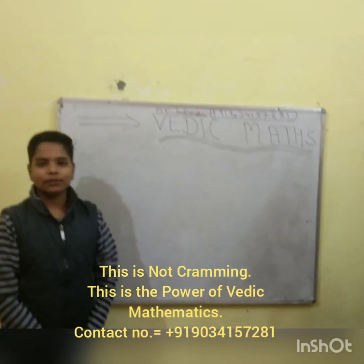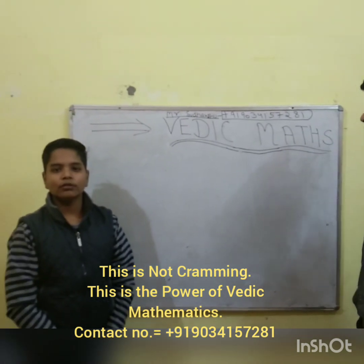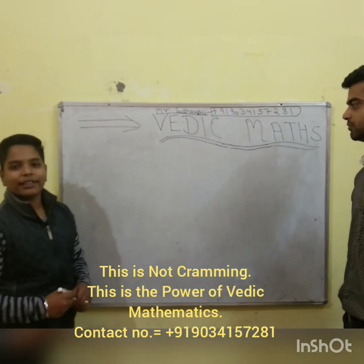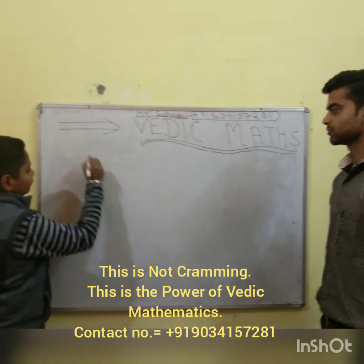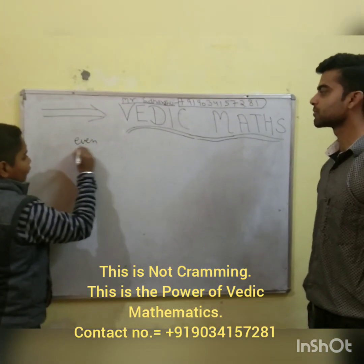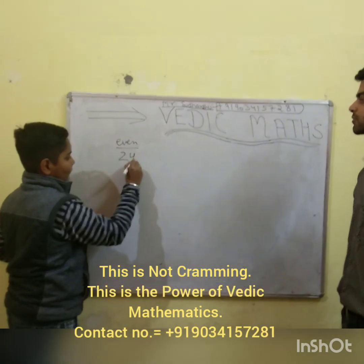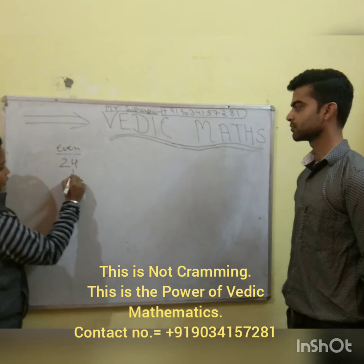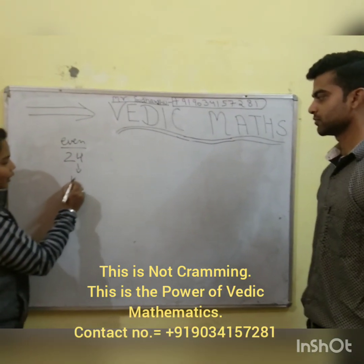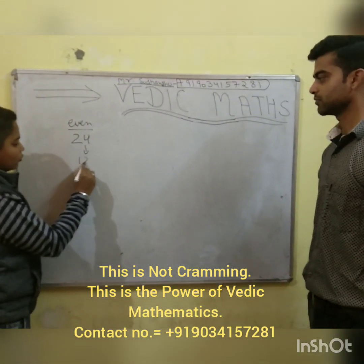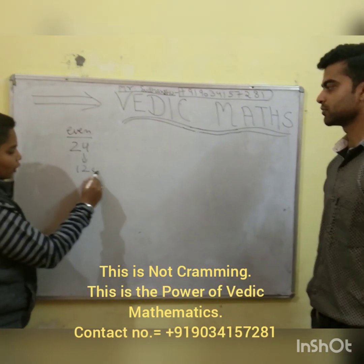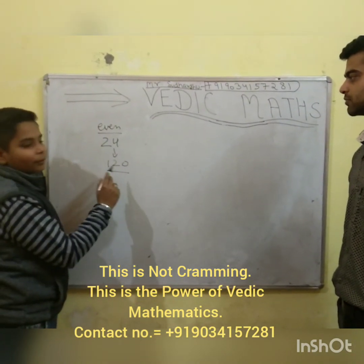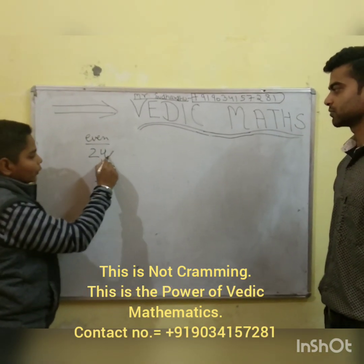Hello friends, my name is Drew. Today I will explain you the trick of multiplying any number with 5. First, we will take the example of an even number. 24 is the even number. First, we will do the half of 24. The half of 2 is 1 and the half of 4 is 2. Now, we will put 0 at the end. The answer is 120 when we multiply 24 with 5.